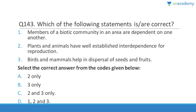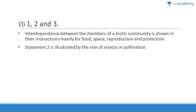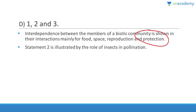Members of a biotic community are dependent on one another, and plants and animals have well-established interdependence for reproduction. Birds and mammals help in dispersal of seeds and fruits by acting as pollinating agents. The answer is D — one, two, three. Interdependence between biotic community members is shown in their interactions mainly for food, space, reproduction, and protection.